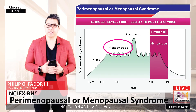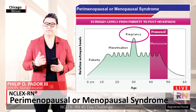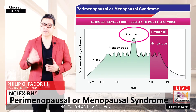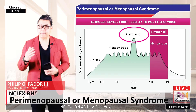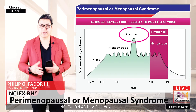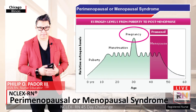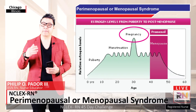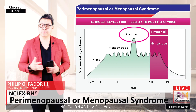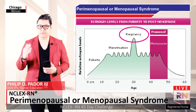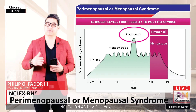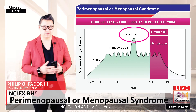During pregnancy, estrogen levels rise in order to prepare the female for parturition and breastfeeding. Then again, there is a normal menstrual cycle with estrogen concentrations fluctuating until about 40 years old.